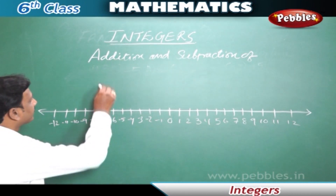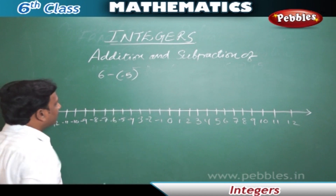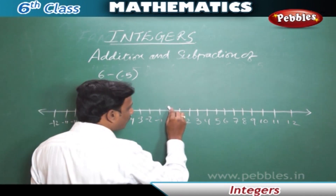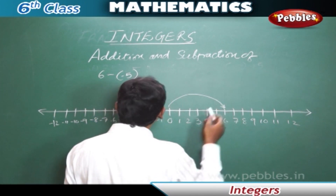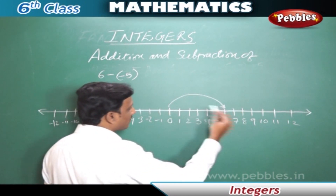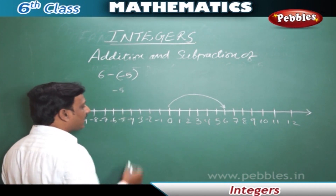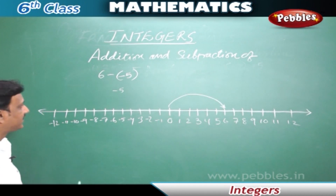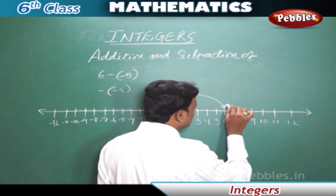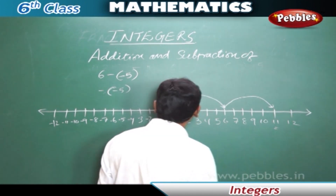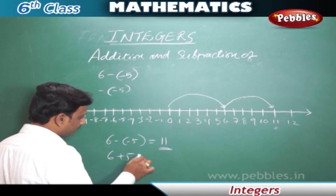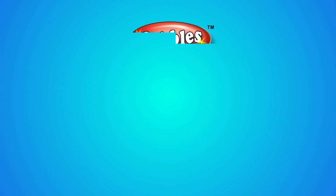Now let us see subtraction: 6 minus minus 5. That means we subtract minus 5 from 6. Starting at 0, we move to 6 first. From 6, we move 5 positions — but here we are moving five positions to the right, not to the left. Because if it were simply minus 5, we would move right to left. But here it is minus minus 5, so minus minus becomes plus 5. From 6, moving five positions to the right, we reach 11. So 6 minus minus 5 equals 11.